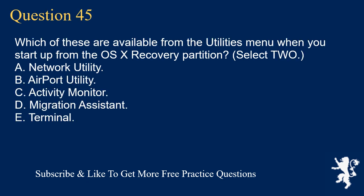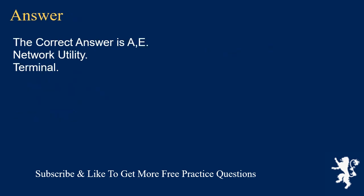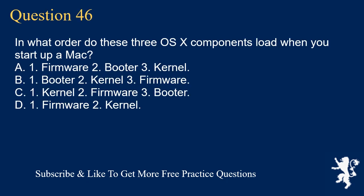Question 45. Which of these are available from the Utilities menu when you start up from the OSX recovery partition? Select 2. A. Network Utility. B. Airport Utility. C. Activity Monitor. D. Migration Assistant. E. Terminal. The correct answer is A and E: Network Utility and Terminal.